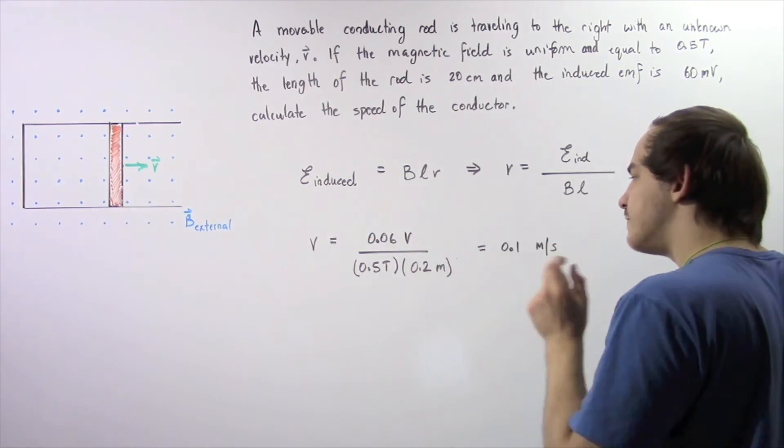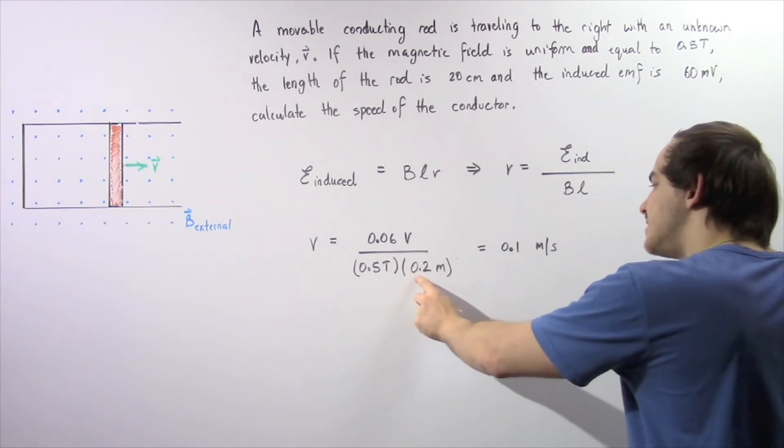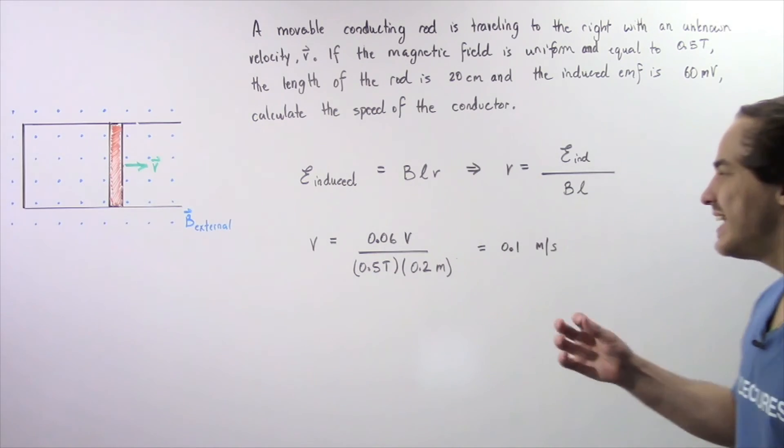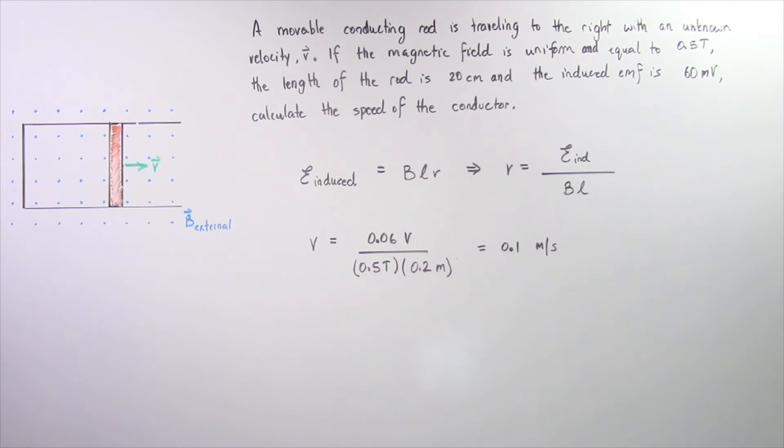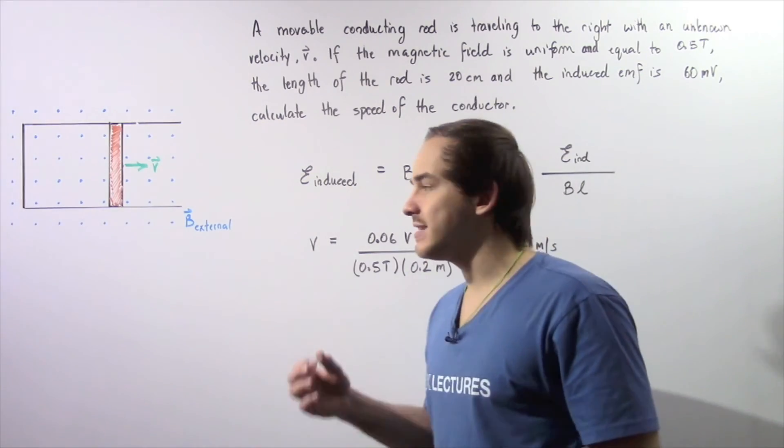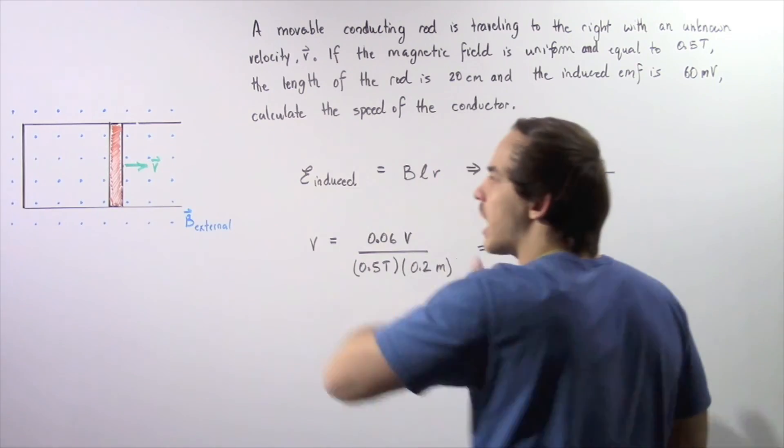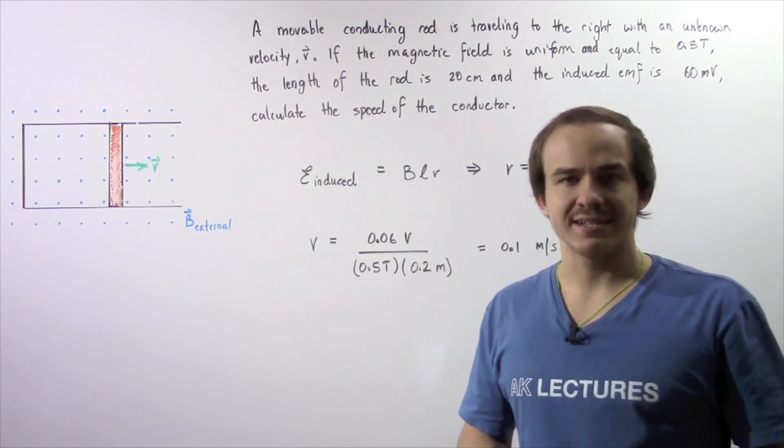0.06 volts divided by 0.5 teslas multiplied by 0.2 meters gives us 0.1 meters per second, the magnitude of our velocity. It's the speed of our moving conductor as it moves to the right along our x-axis.